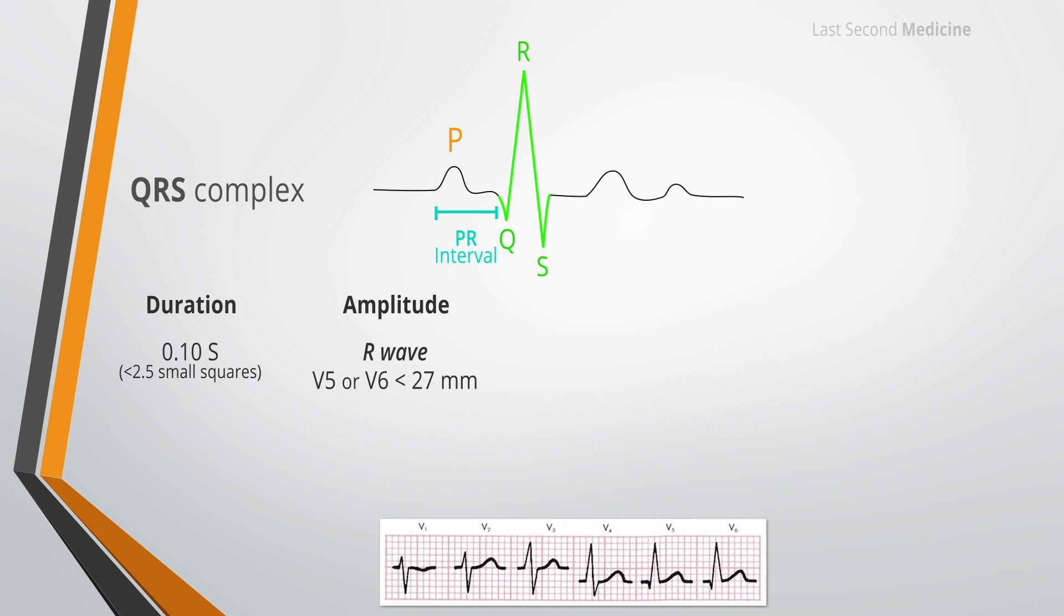The height of the R wave is variable and increases progressively across the precordial leads. It is usually less than 27 millimeters in lead V5 and V6. The R wave in lead V6, however, is often smaller than the R wave in V5 since the V6 electrode is further from the left ventricle. The S wave is deepest in the right precordial leads. It decreases in amplitude across the precordium and is often absent in lead V5 and V6. The depth of the S wave should not exceed 30 millimeters in a normal individual. S waves and R waves more than 30 millimeters are occasionally recorded in normal young male adults.